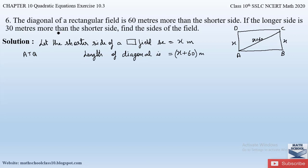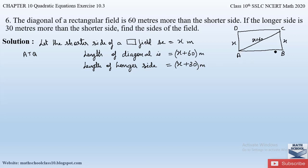Similarly, they have also mentioned that if the longer side is 30 meters more than the shorter side, so the length of the longer side is x + 30 meters.